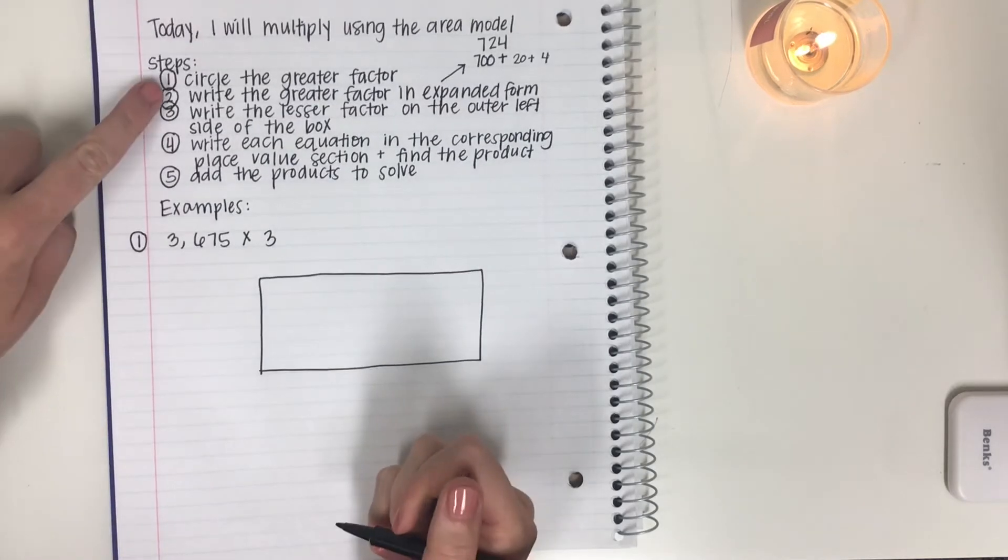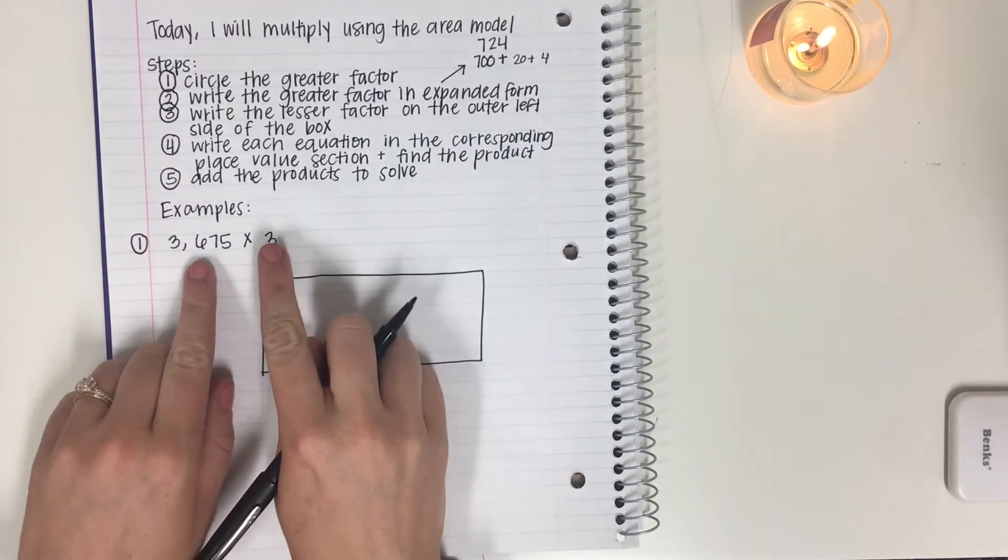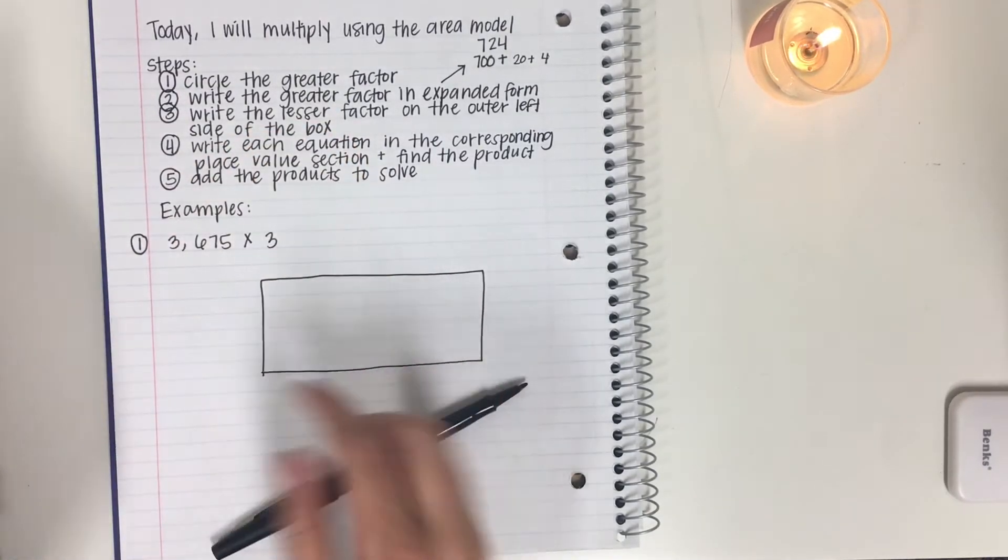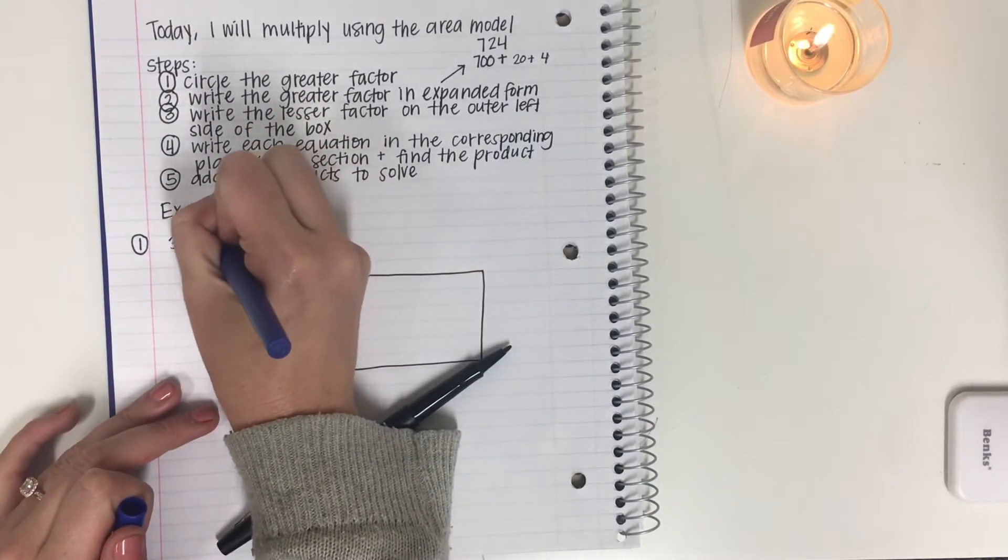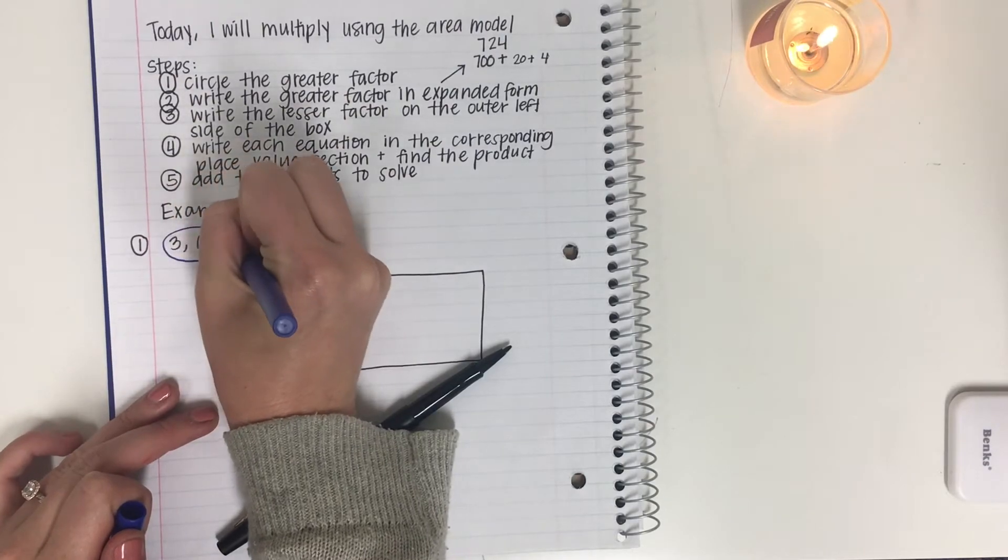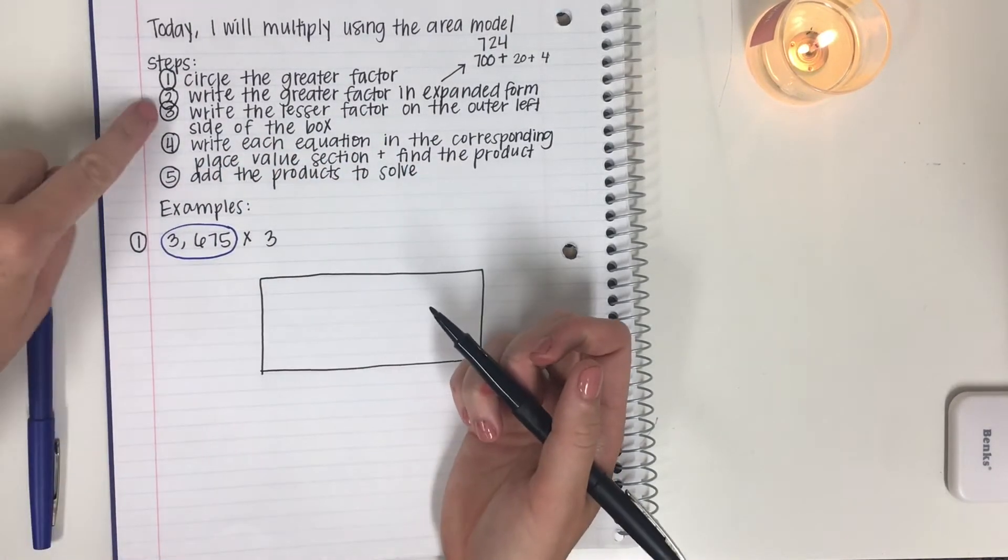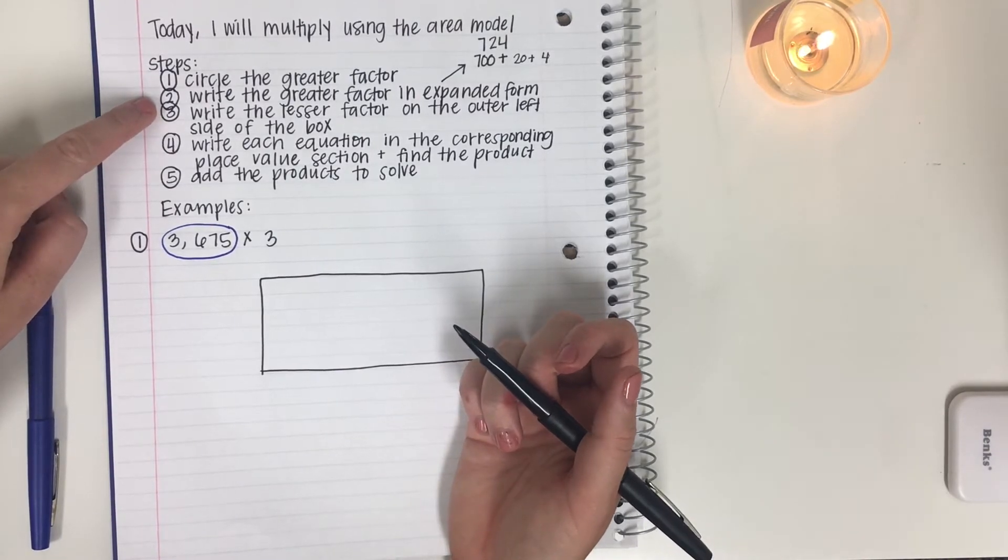Step one, circle the greater factor. Which number is greater? Well, we can see that this has way more place values. So it's going to be 3,675 is greater than 3. Now, step two is write the greater factor in expanded form.